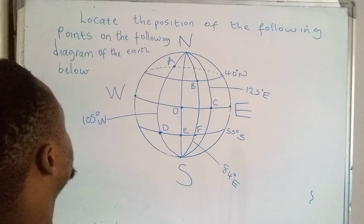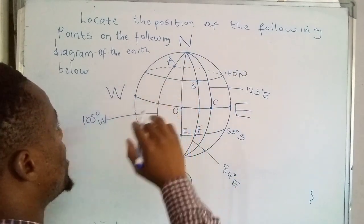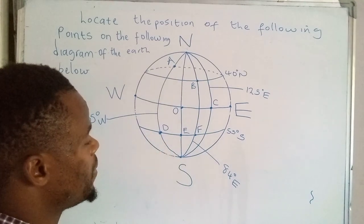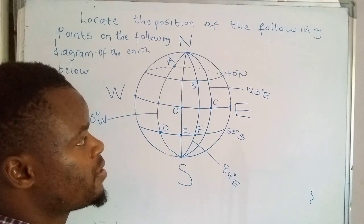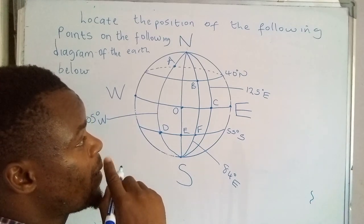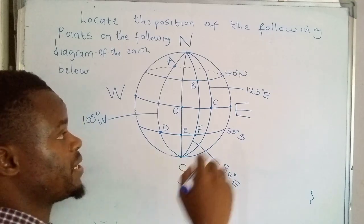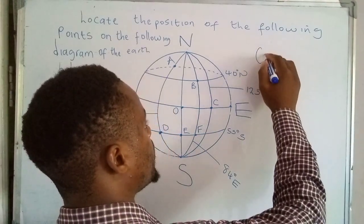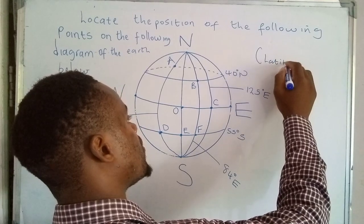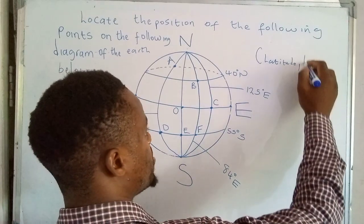So the problem reads: locate the position of the following points on the following diagram of the Earth below. So what you need to know is places are actually located by first of all considering the latitude on which that place is located, and then you consider the longitude.